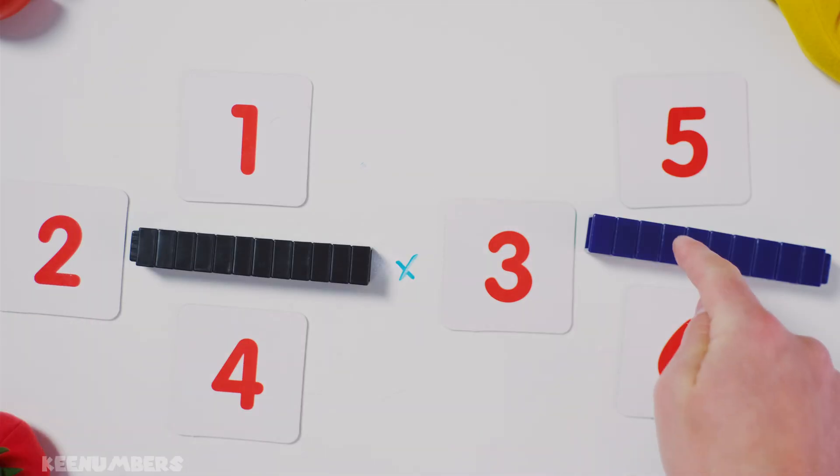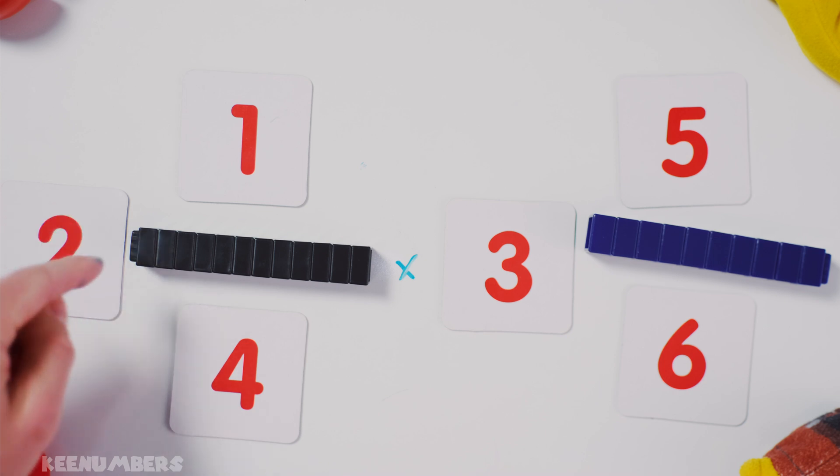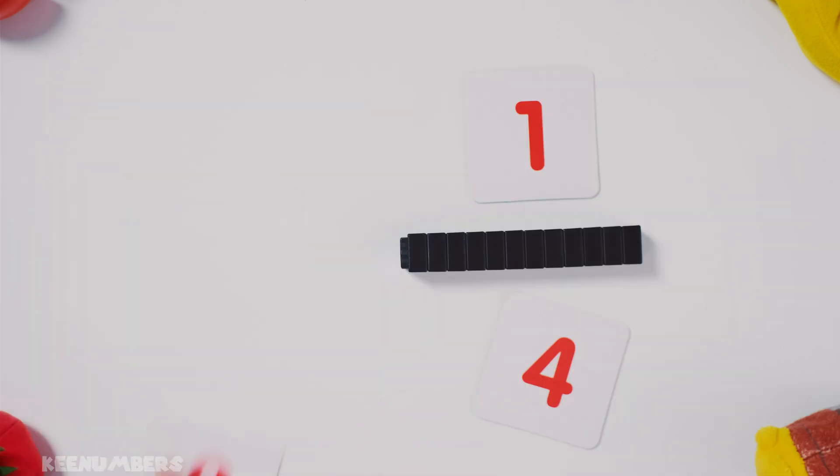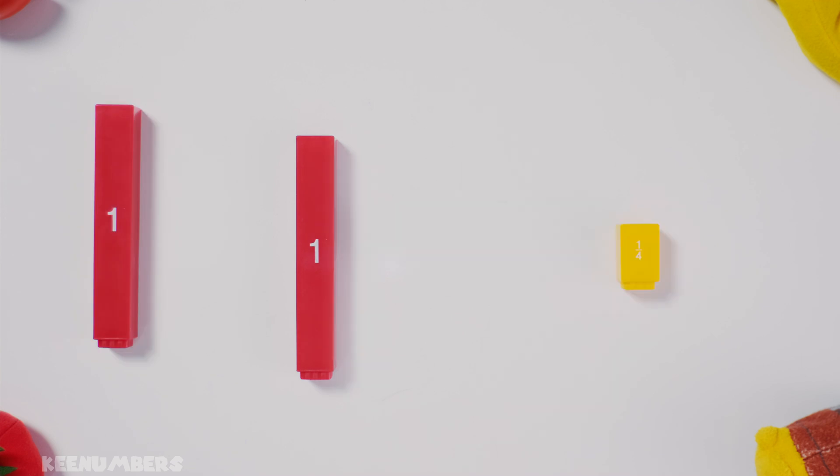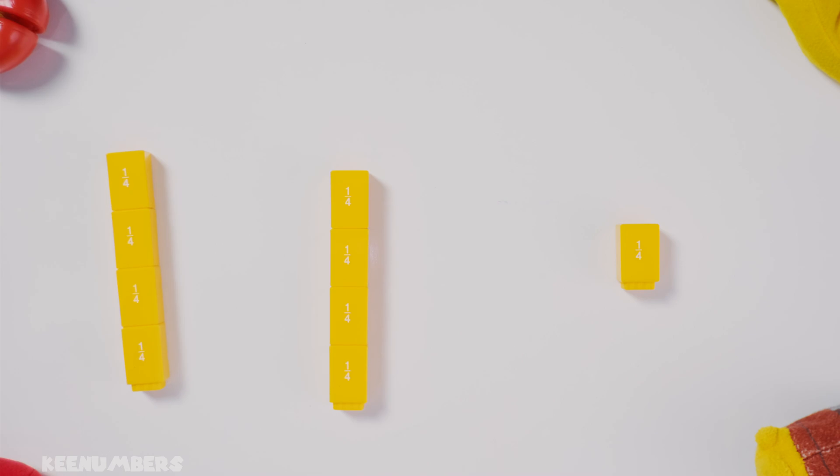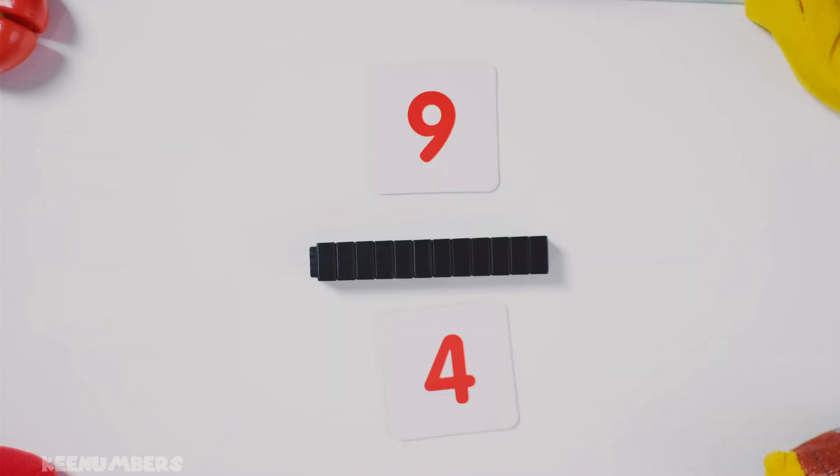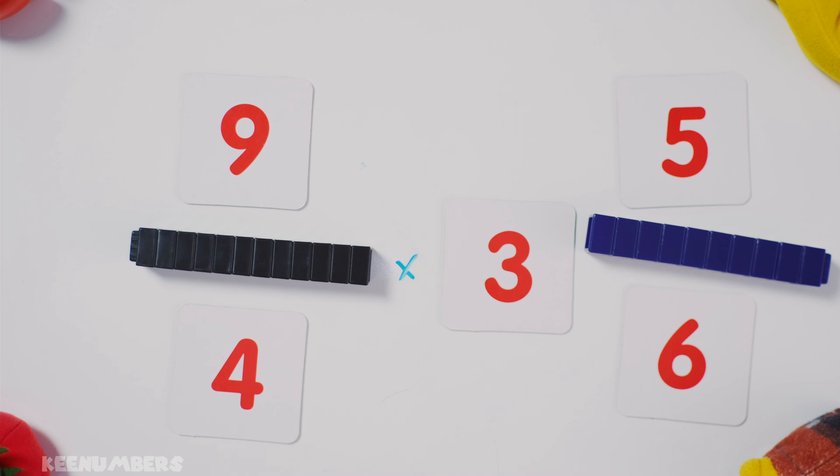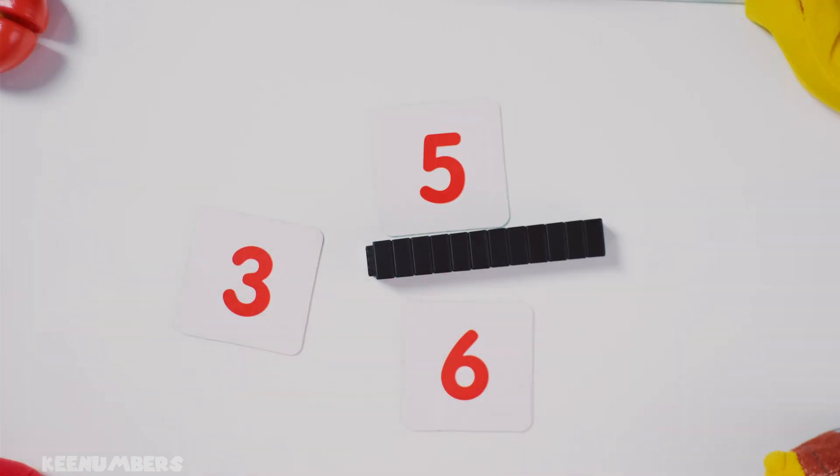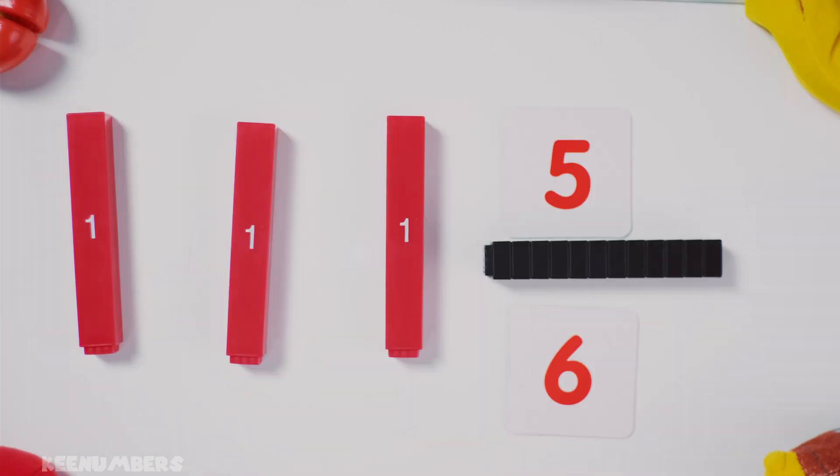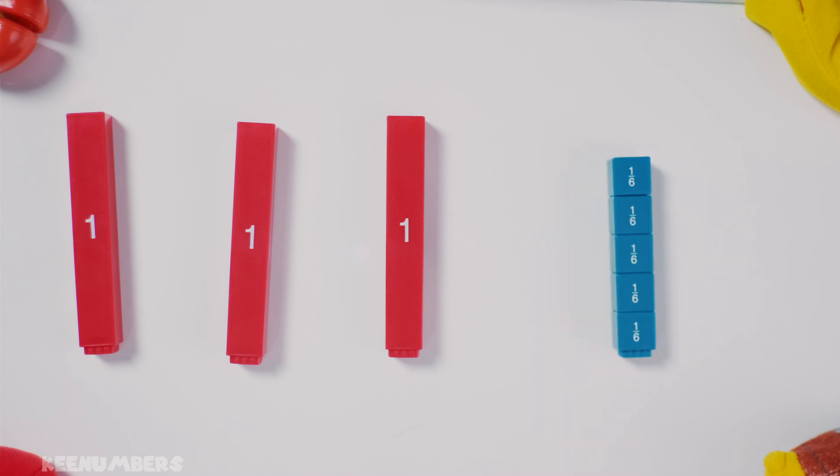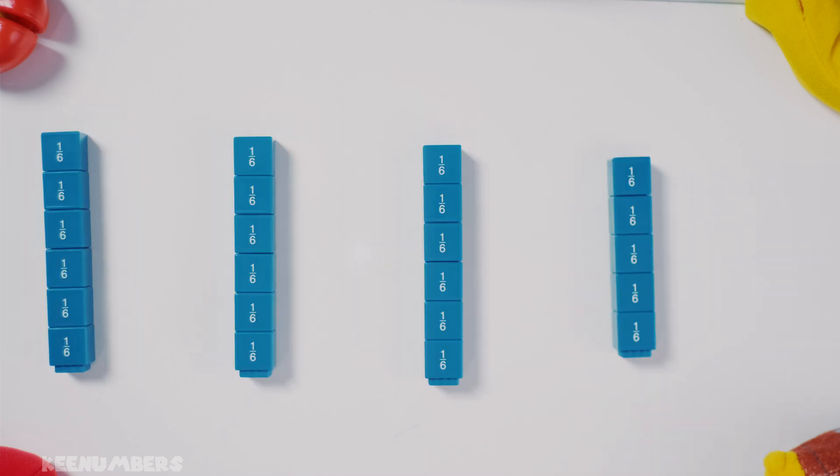Mixed number times mixed number. Don't get scared. Let's convert this to an improper fraction first. Because there are four quarters in one, you have eight quarters plus one quarter, or nine quarters. Now let's convert three and five sixths to an improper fraction. You have six sixths in one, so three whole numbers will have eighteen sixths. And thus when you add five sixths, you're gonna get twenty-three sixths.